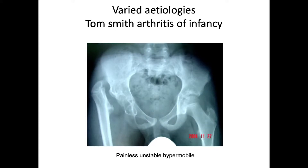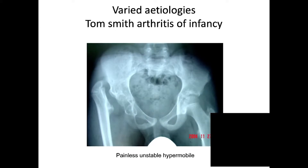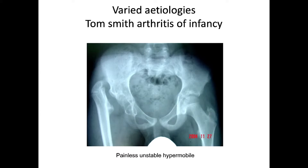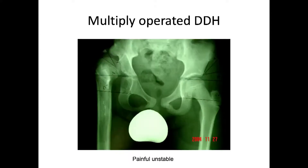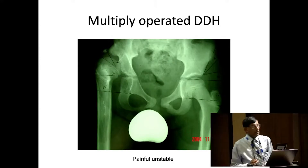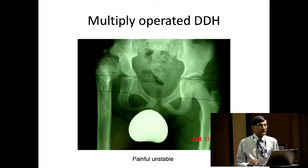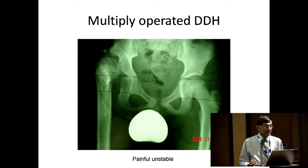For those who come from endemic countries, this is infection when you are an infant where the whole femoral head disappears and it is named as Tom Smith arthritis of infancy. This one usually is a painless, unstable, hypomobile hip and a good one for a pelvic support osteotomy. This is a multiply operated DDH which has failed — the hip is migrated very high, is unstable, and also painful.